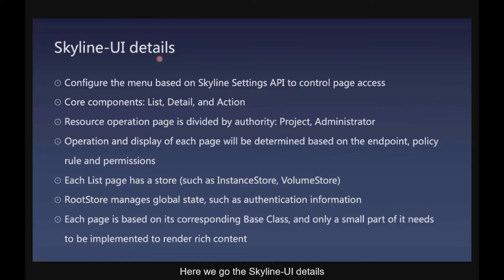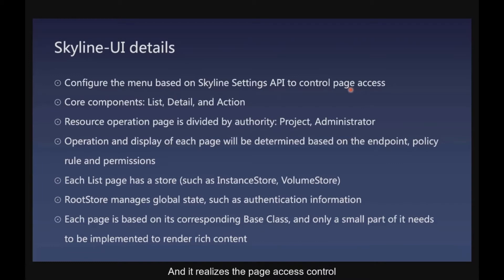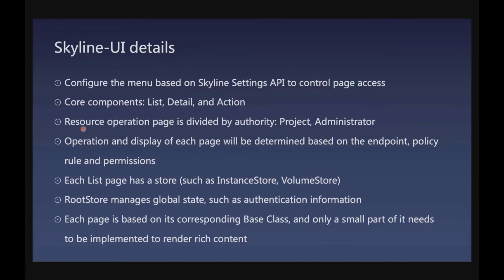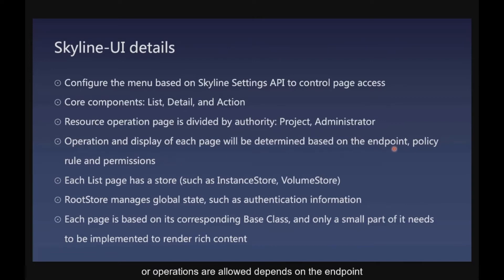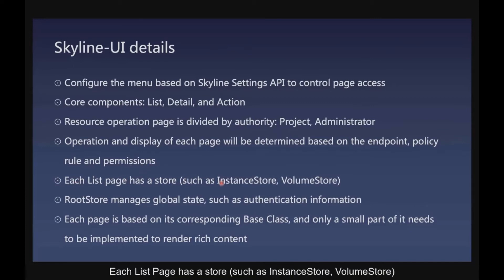Here are the Skyline details. Whether the menu is configured depends on the Skyline Settings API, which realizes page access control. It has three core components: list, detail, and action. The resource operation page is divided by authority — project admin and system admin have different operation panels. Whether pages are accessed or operations are allowed depends on endpoint policy rules and permissions. Each list page has a store, such as instance store or volume store. The root store manages global states such as authentication information.